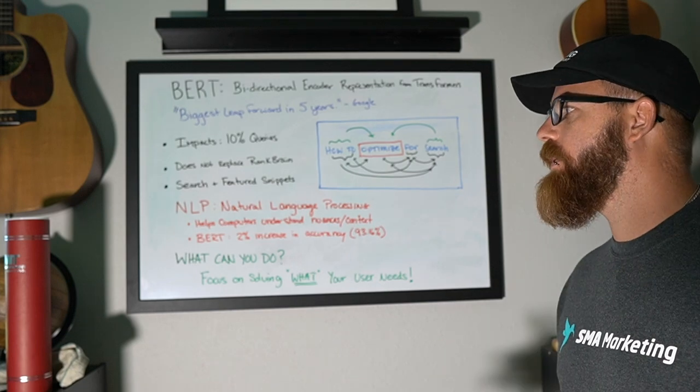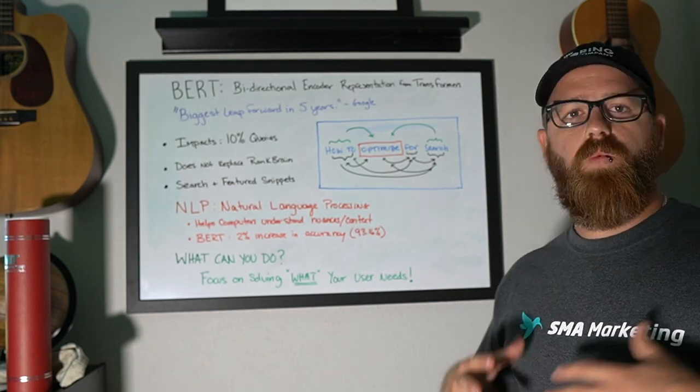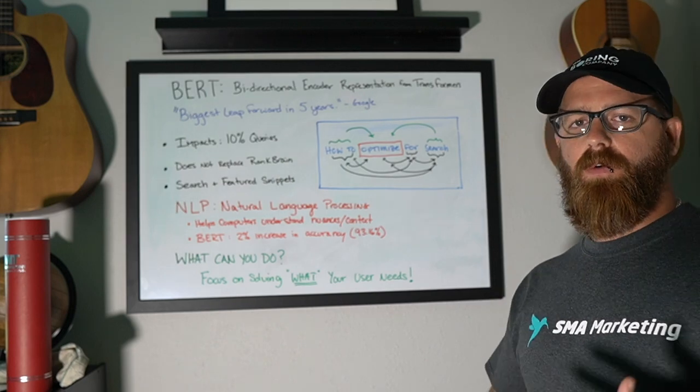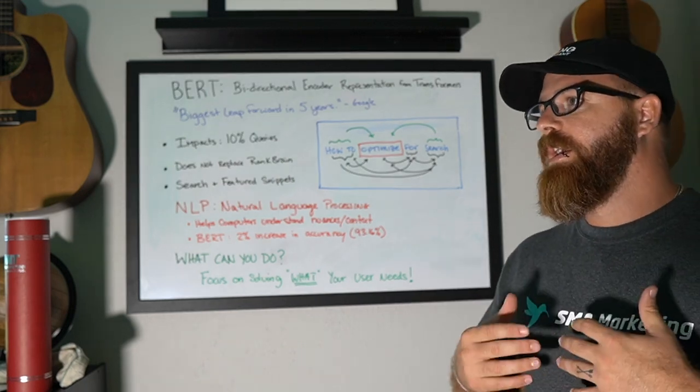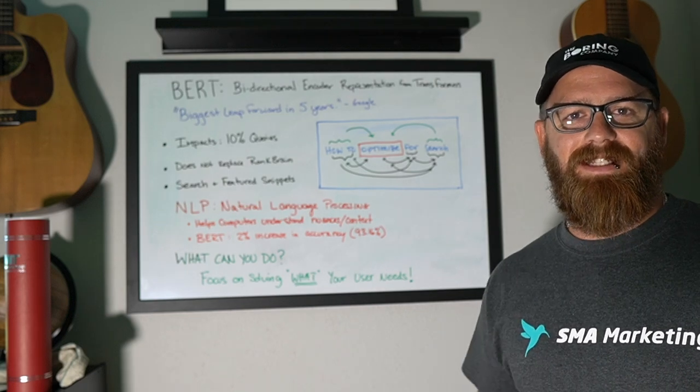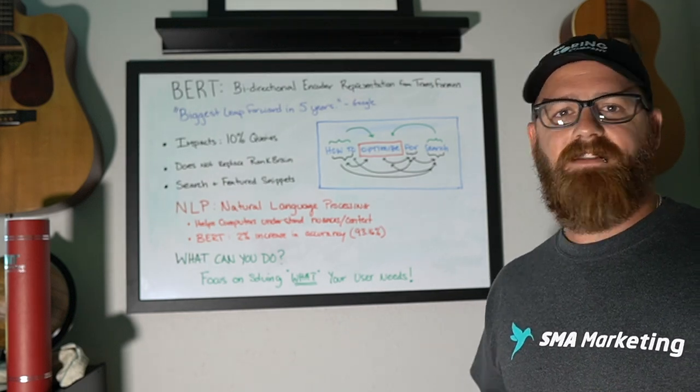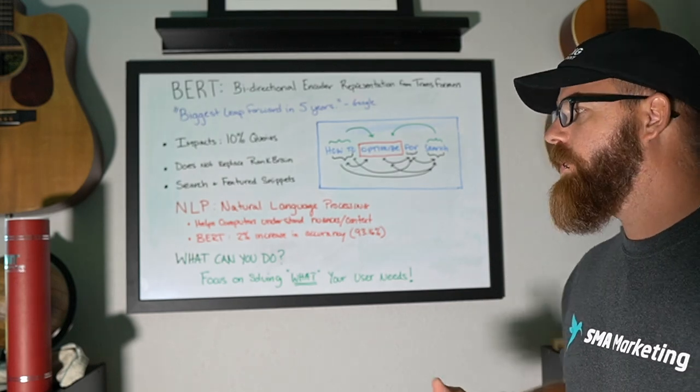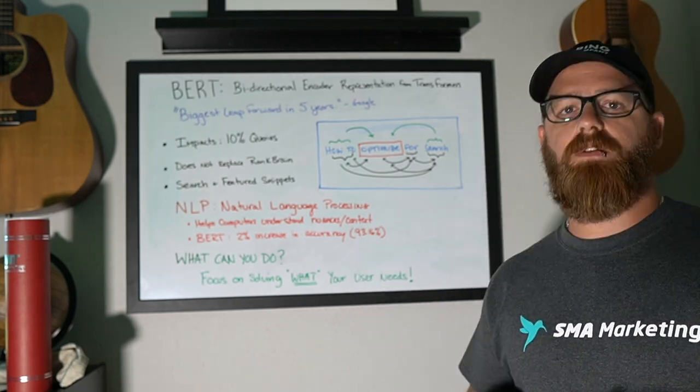A lot of SEOs are right now going, how do we optimize for this? What should we do? How do we make sure that our sites are BERT ready? You can't do anything, to be honest. It's a machine learning algorithm. It's looking, it's taking data, and it's trying to understand the context of that data based on the learnings that it's been given. So, you can't optimize for BERT.